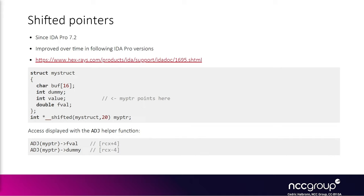Here we have an example of a simple my_struct structure with four elements: a character array, two integers, and a double. There is a special notation in IDA using the 'shifted' keyword that allows defining a new type known as a shifted pointer. We define the my_pointer new type as an int pointer type, placed 20 bytes after the beginning of my_struct — after the 16-byte char array and the dummy integer — so it effectively points to the value variable.